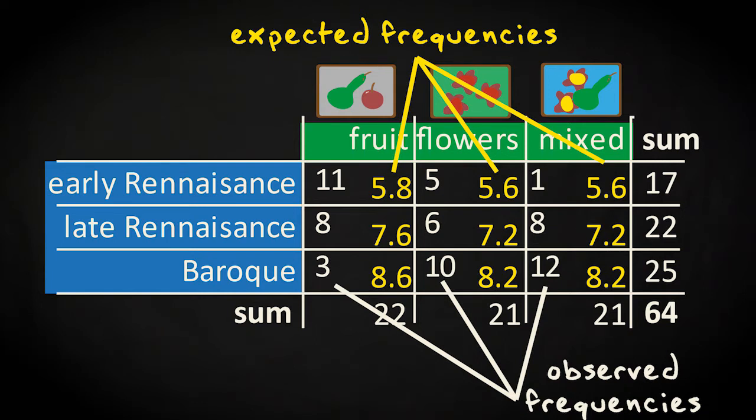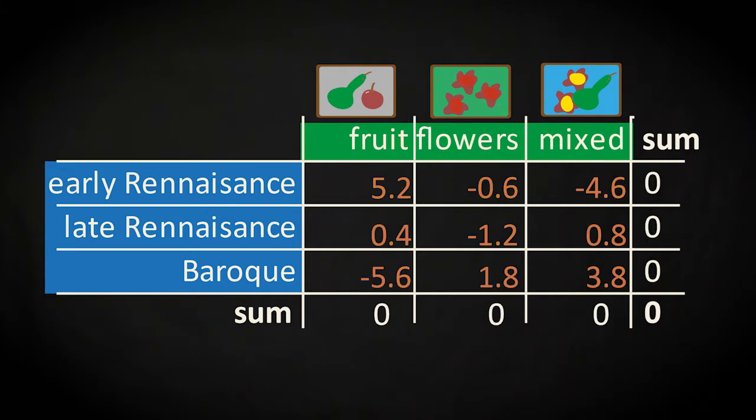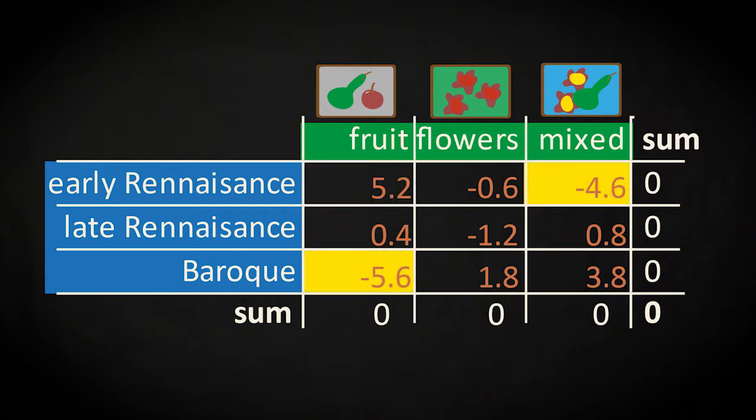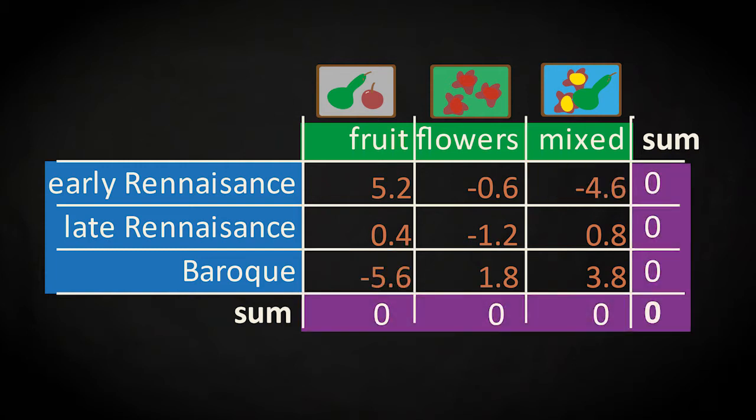For easier comparison, let's calculate the difference between the observed and expected frequencies. In the table with residuals, we see that there are positive as well as negative residuals in each row and in each column. This has to be the case, because row and column totals are the same for observed and expected counts.